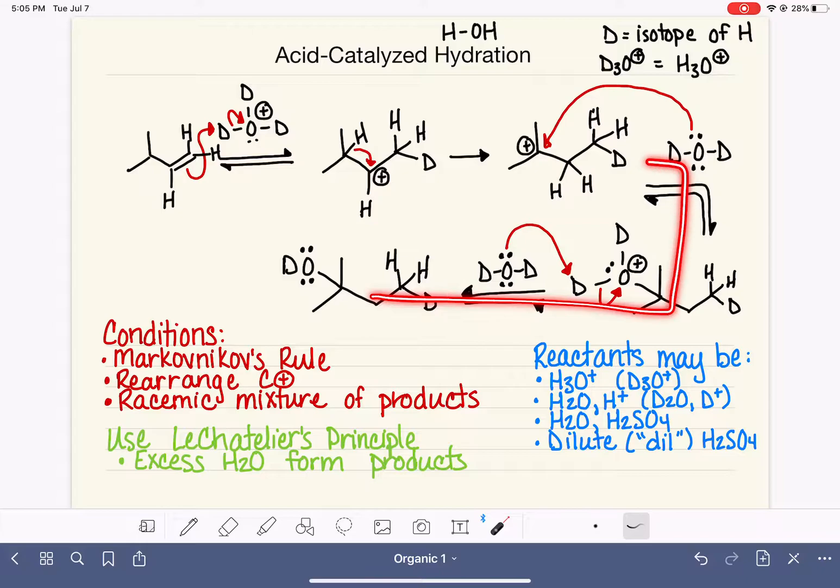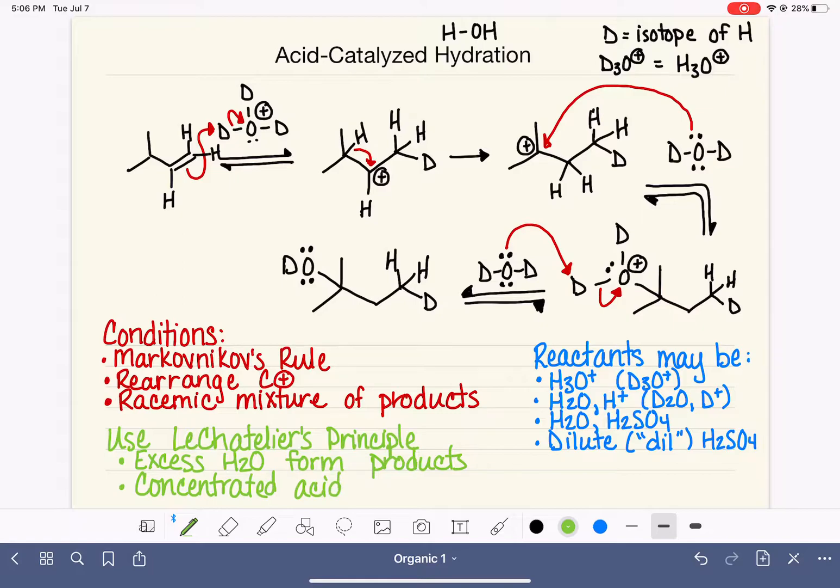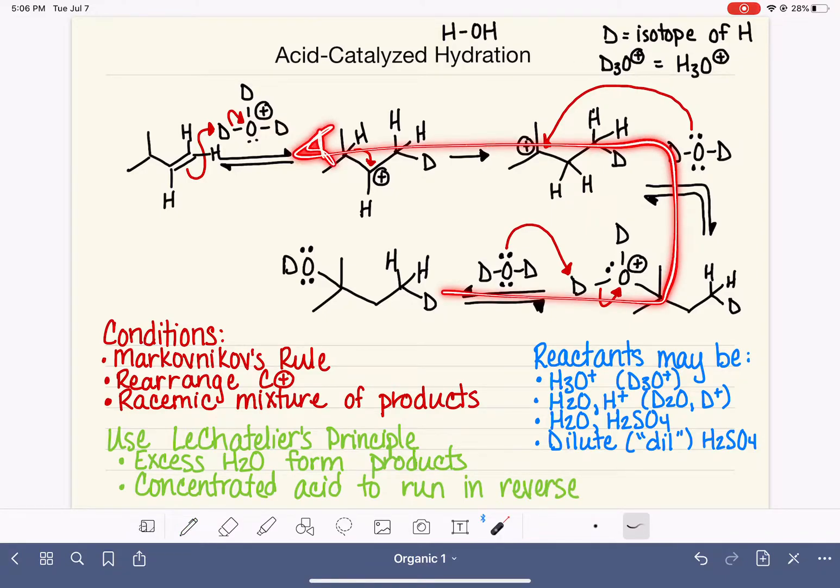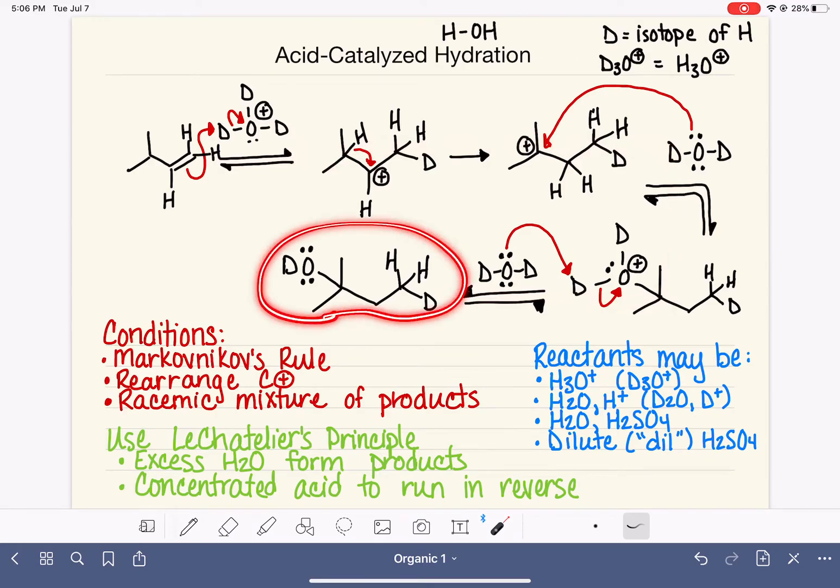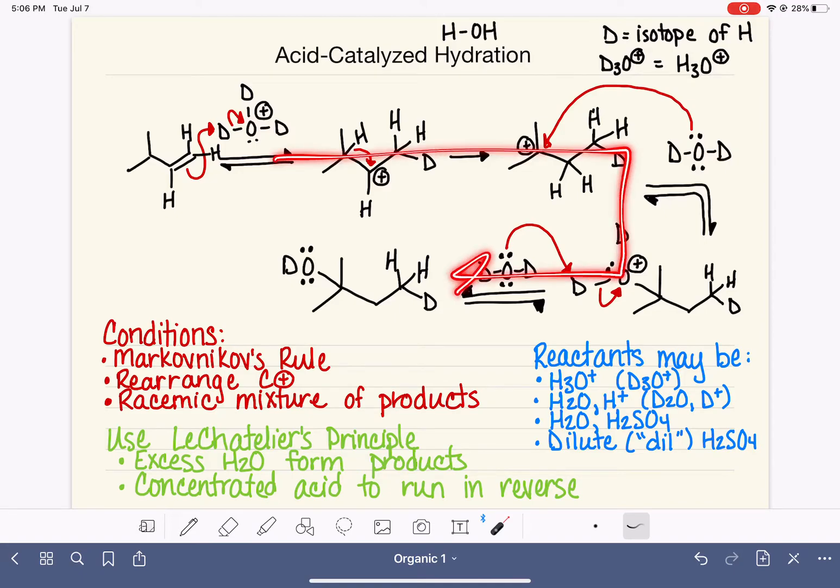It is possible to move the reaction backwards to convert this alcohol backwards to an alkene. And if we want the reaction to go in the reverse direction, we would use concentrated acid to run the reaction in reverse. We won't study the reaction going in reverse for quite a while. We won't talk about it until we really study alcohols as a functional group. But just keep that in the back of your mind that the reaction can go forward if we're using dilute acid and it can go backwards if we're using concentrated acid.